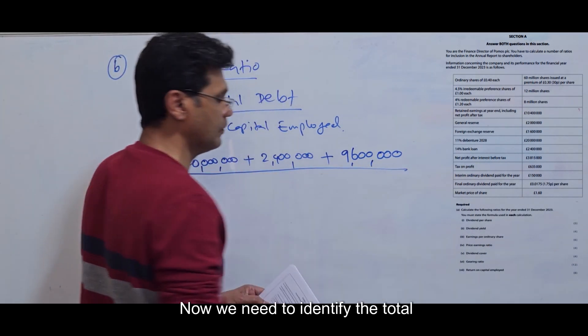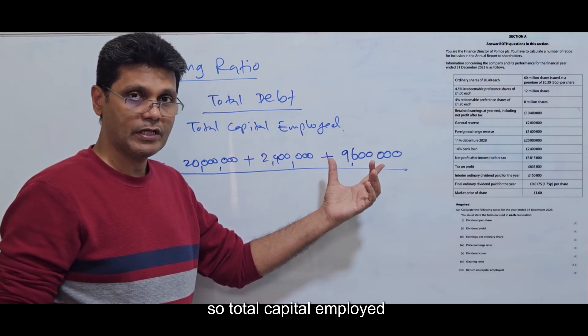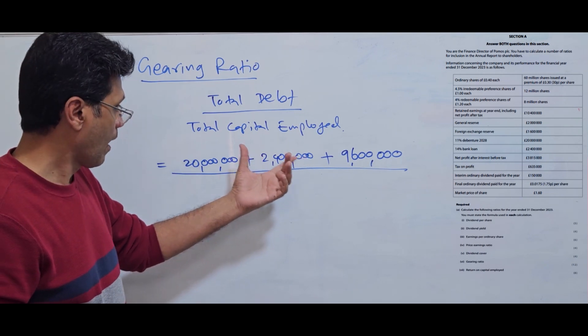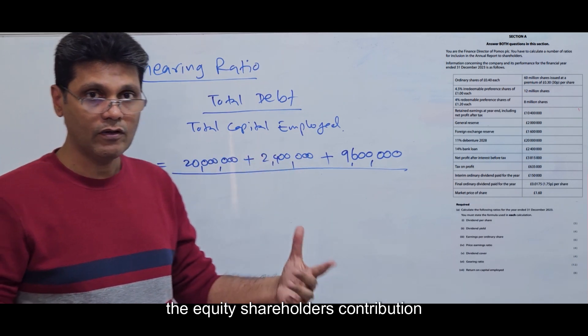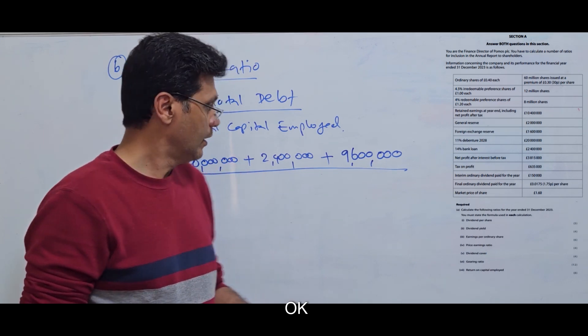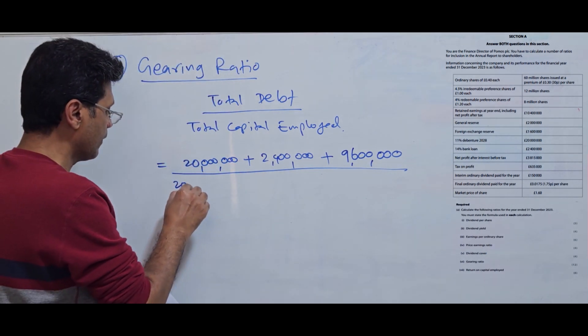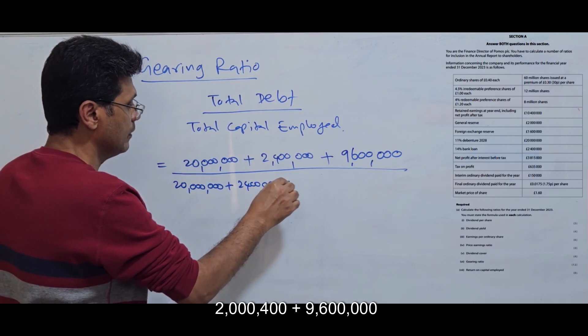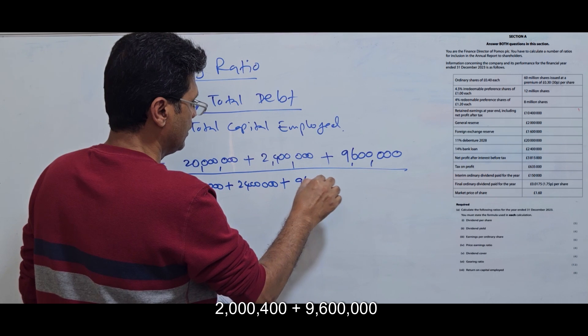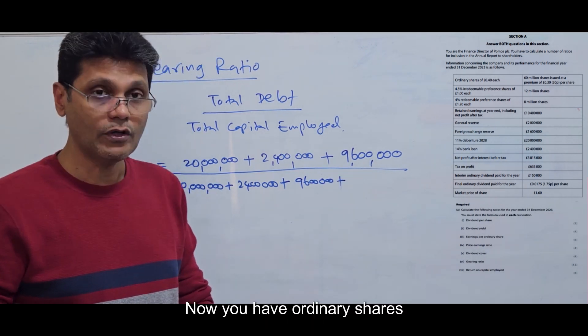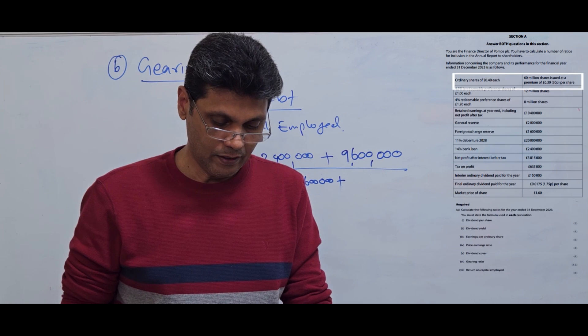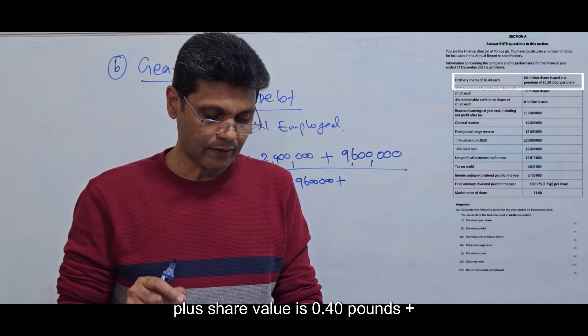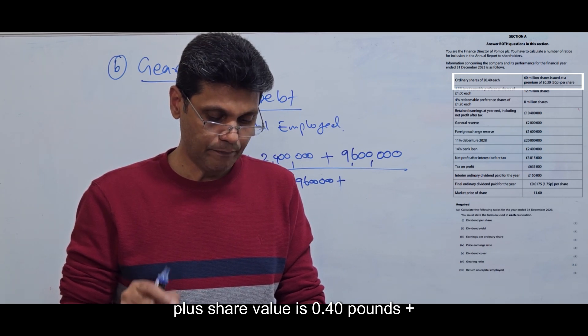Now we need to identify the total capital employed. We add the equity shareholders' contribution. So you have 20 million plus 2 million 400 plus 9 million 600, plus ordinary shares of 60 million shares at 0.40 per share.